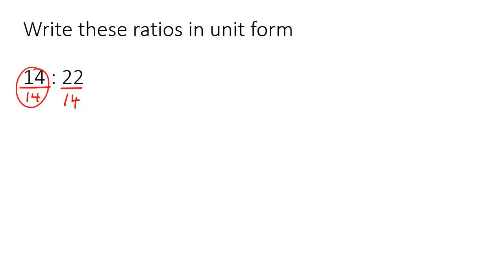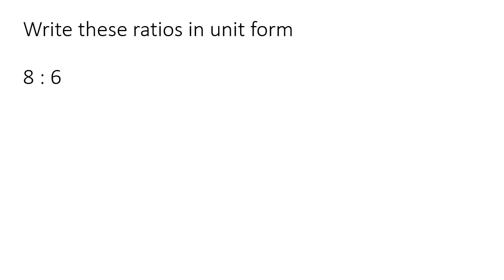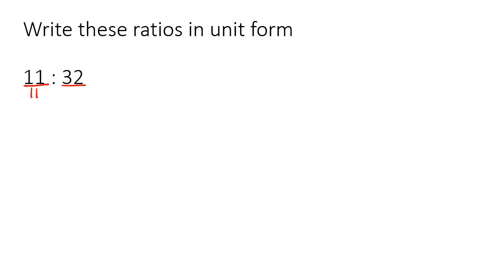So 14 divided by 14 is one, and then 22 divided by 14 — you can just put that into the calculator because it's going to give you some ugly decimals. Just round to two decimal places or whatever your teacher asks for, so that'll be 1.57. You see it's got a decimal, but that's okay when we're using unit form. For the next one, divide by the smallest — you don't have to simplify first, just divide both sides by the smallest. So you end up with a one and 1.33. For the last one, you always divide by the smallest when going for unit form, so divide by 11 to end up with a one. Then 32 over 11, rounded to two decimals, would be 2.91.